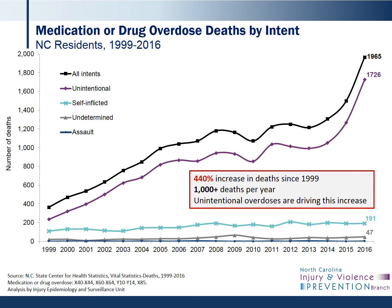In North Carolina, as in the United States as a whole, deaths due to medication and drug overdoses have been steadily increasing since 1999. And the vast majority, approximately 88% of these, are unintentional deaths. In 2016, there were 1,965 medication and drug overdose deaths, and over 1,700 of those deaths were unintentional. While the number of self-inflicted deaths have remained relatively stable — less than 200 a year — unintentional drug overdoses have continued to rise. Again, these numbers include deaths from all types of medication and drugs, but opioids have contributed to the majority of these deaths.